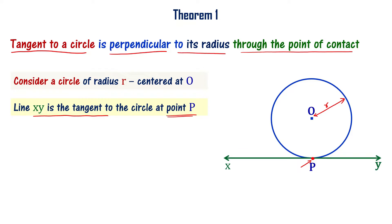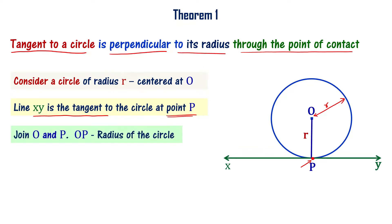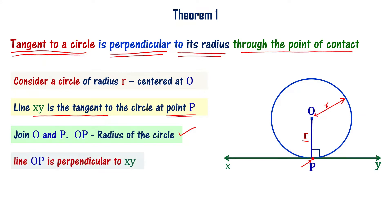What this theorem is saying: if you join O and P, what you have is radius OP. OP is the radius of the circle. The theorem says tangent to the circle is perpendicular to the radius through the point of contact — that is, line OP is perpendicular to tangent XY.